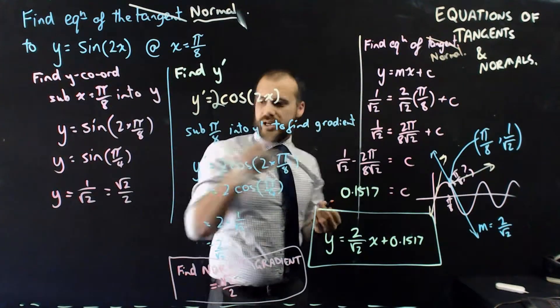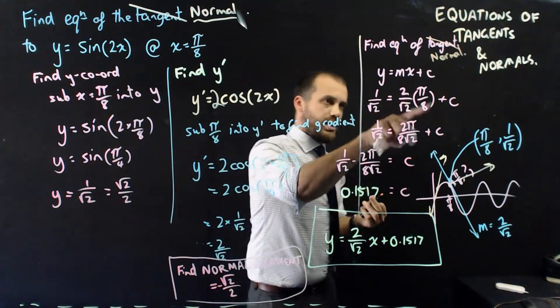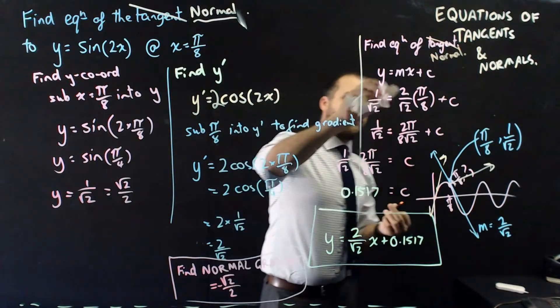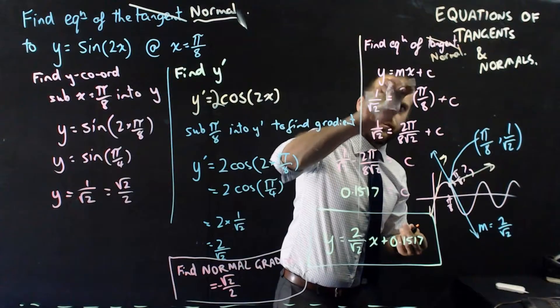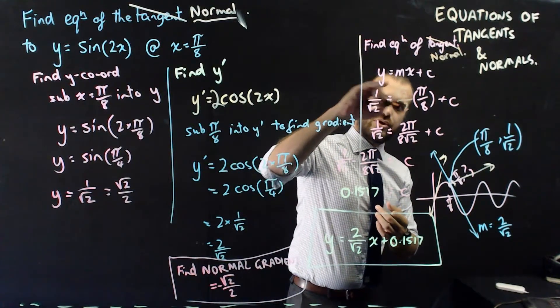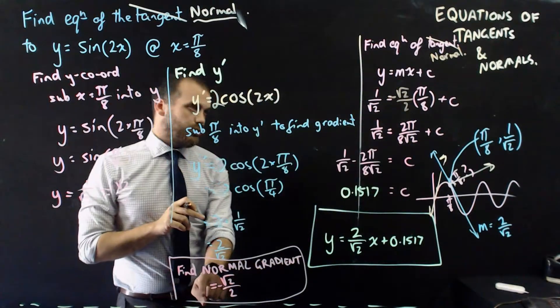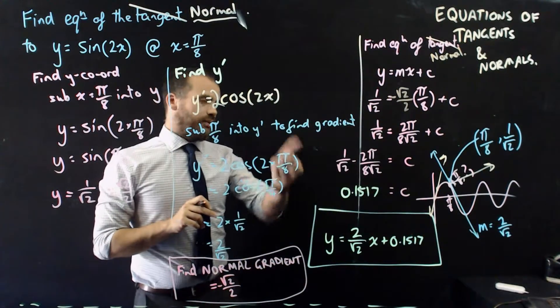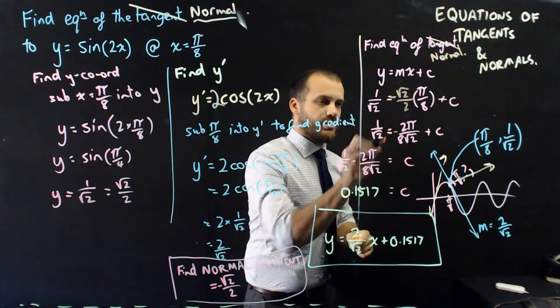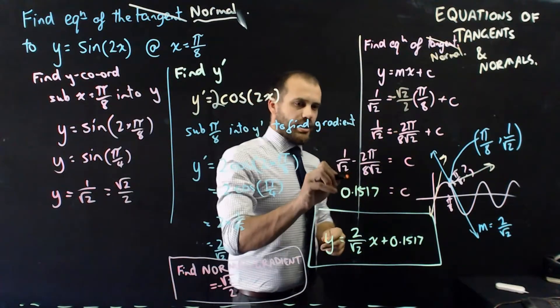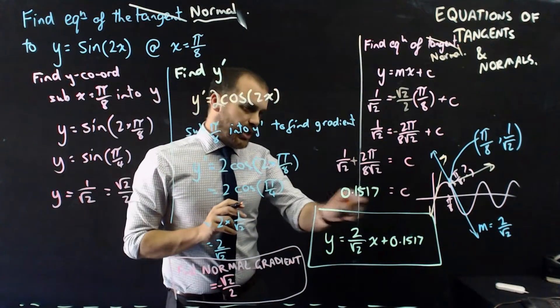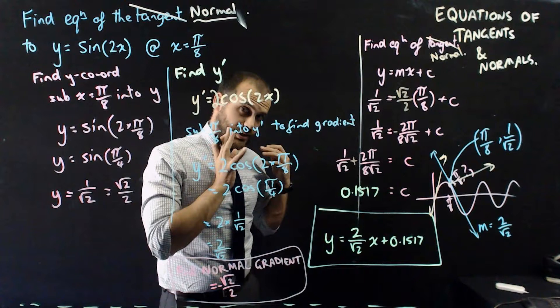y equals mx plus c. The y coordinate stays the same, the x coordinate stays the same, but the gradient changes from 2 root 2 to root 2 on 2 negative, because that was my normal gradient there. What does that change? Well that thing now becomes negative, and that becomes positive, and that number becomes something else.